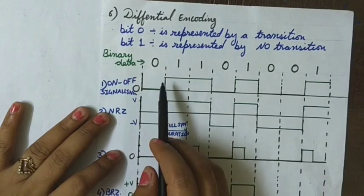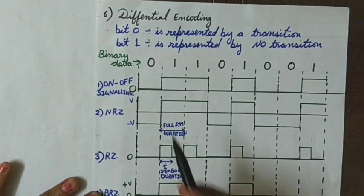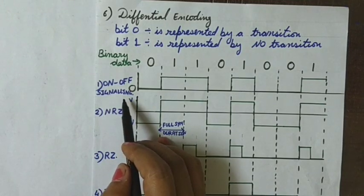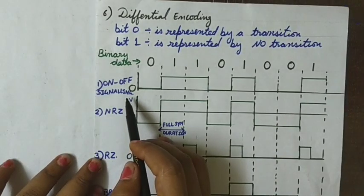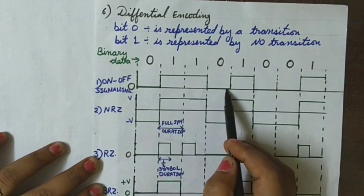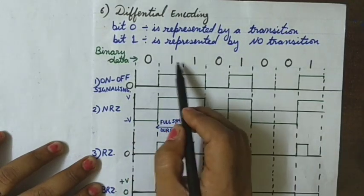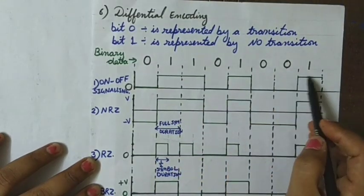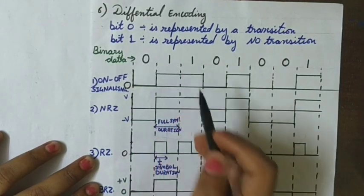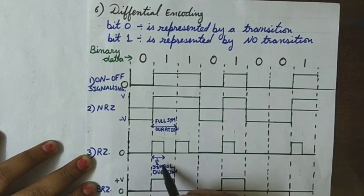Here I have used a binary data sequence of 0 1 1 0 1 0 0 0 1 and will be using all six different line coding schemes to convert this binary data into an electrical waveform. The first one is on-off signaling. We have already said that one is represented by a positive pulse of constant amplitude and zero by no pulse. Wherever there is a zero there is no pulse, and wherever there is a one there is a constant positive amplitude pulse. The dashed lines show the symbol duration — between two dashed lines is the full symbol duration and half of the width is the half symbol duration.